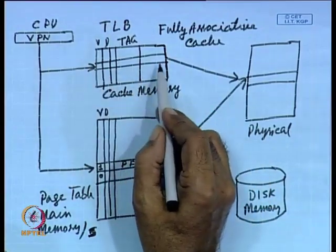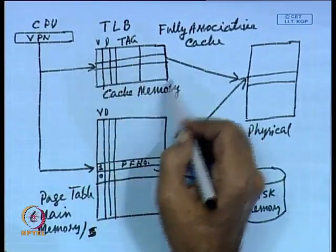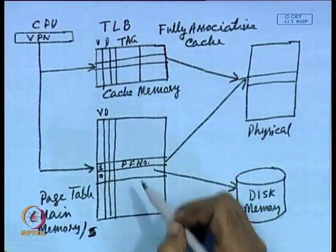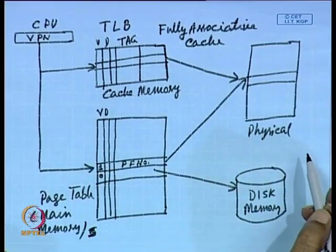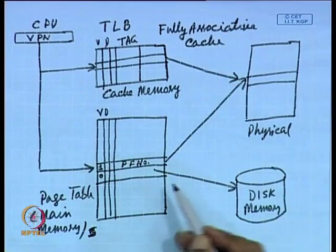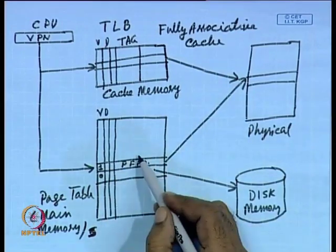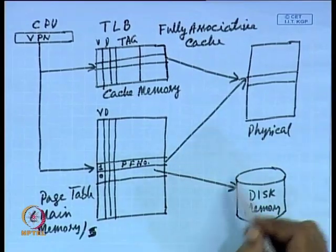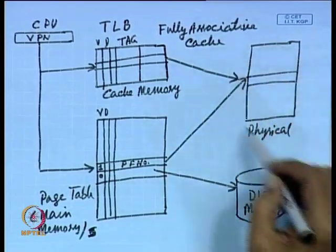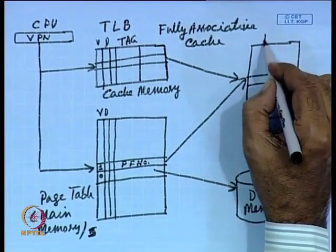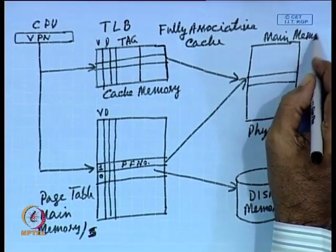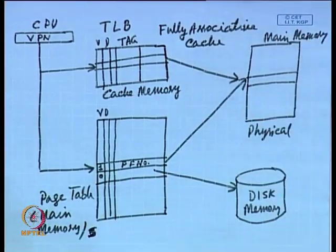TLB is a small portion of the page table — those entries which are currently being used are stored in the TLB. Since it is usually a fully associative cache memory, it makes it faster. If the data is present in TLB, you get it from there. However, since only a subset of the page table is stored, you may have to look at the page table, incurring the usual delay. And of course, whenever the data is not present in the page table, you have to get it from the disk memory.